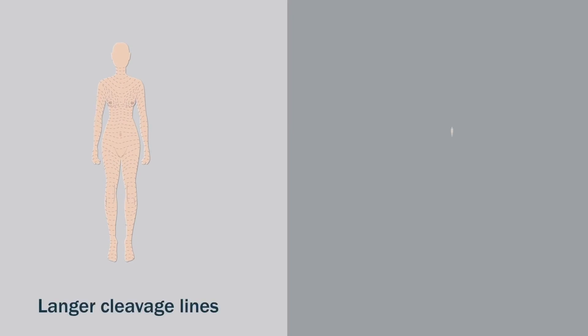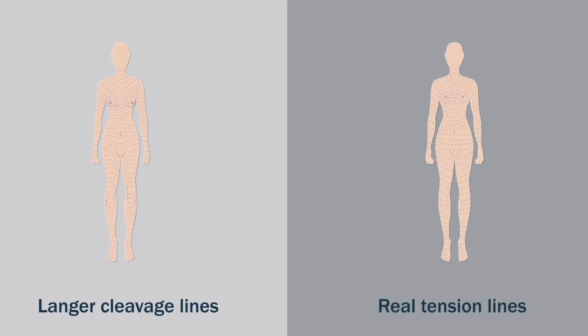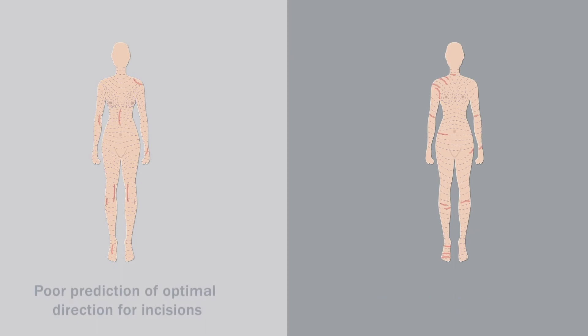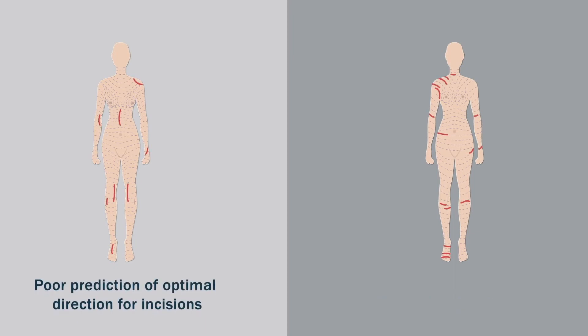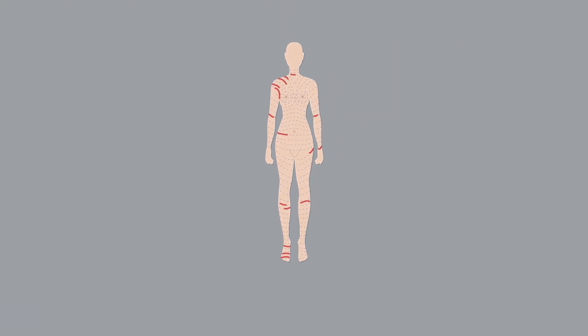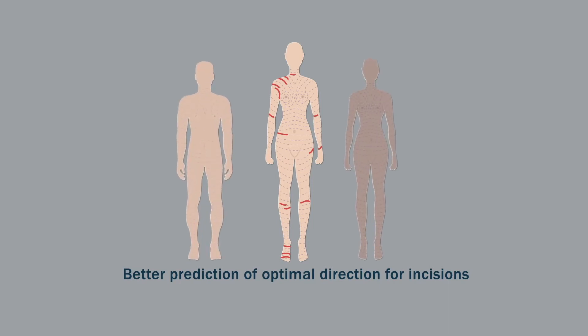They concluded that classically described Langer cleavage lines often run counter to real tension lines and poorly predict the optimal direction for skin incisions, whereas stria are a more objective indicator for the direction of true tension lines, since they follow the natural anti-tension lines of the skin of all individuals, irrespective of age and race.